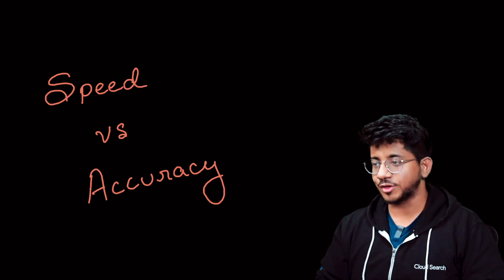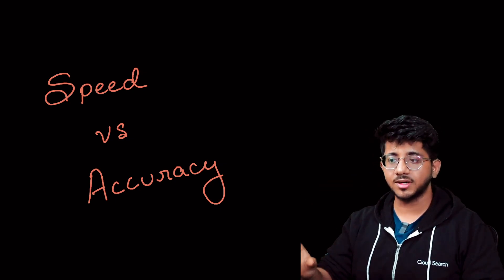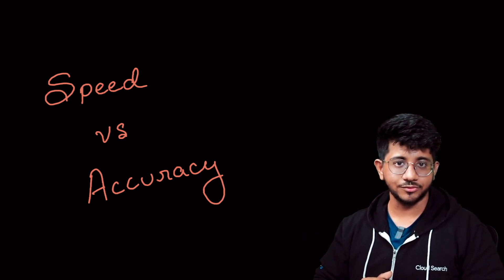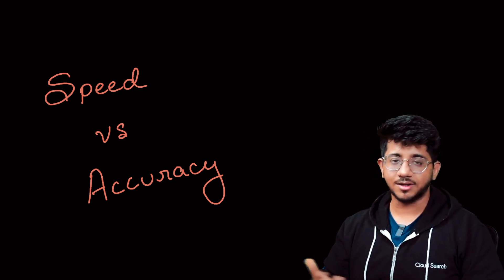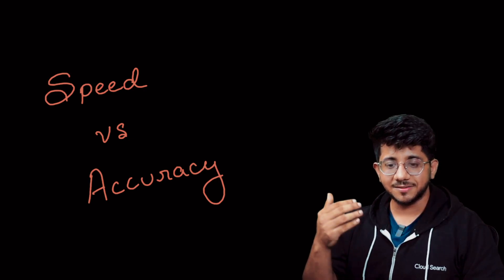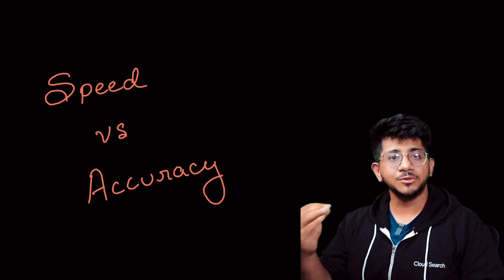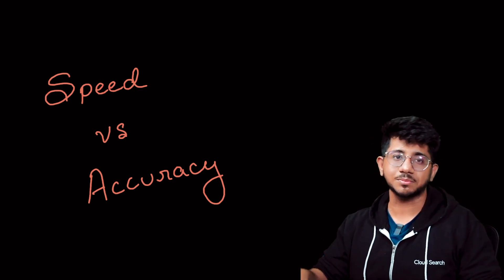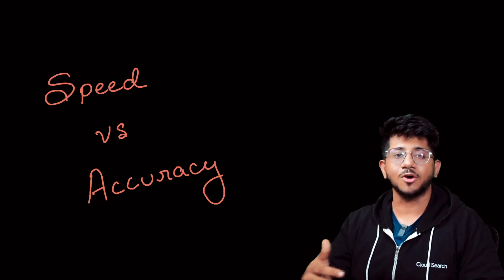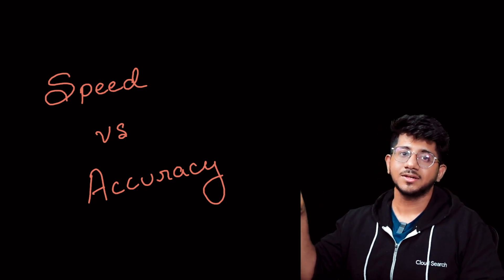So in the first hundred problems, always focus on accuracy — understand every line of code and write things correctly on the first go. Speed you will learn beyond that, don't worry about it. In the next hundred problems, focus a little more on implementation, because that will build your speed and an understanding of basic language syntaxes. By the end of two hundred problems, you'll have learned the major syntaxes.